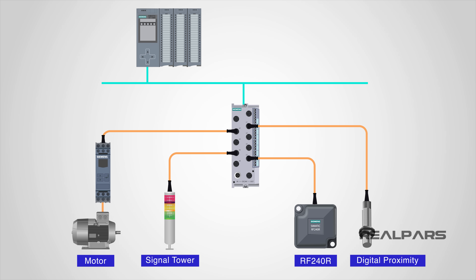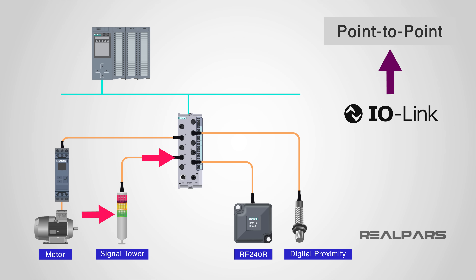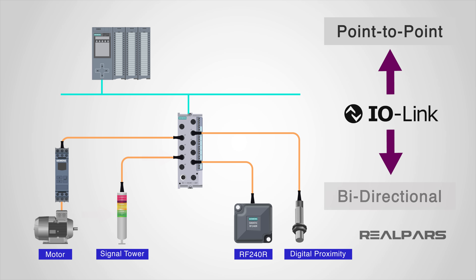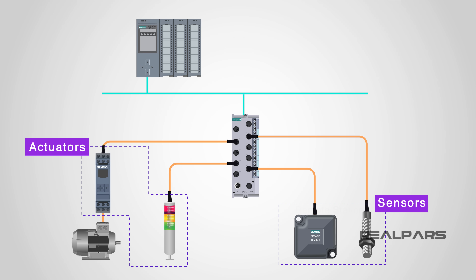IO-Link is a communications protocol that works point-to-point. A point-to-point communication connection is a communications connection between two separate endpoints or nodes. IO-Link is bi-directional, meaning it works two ways, and works over a short distance.